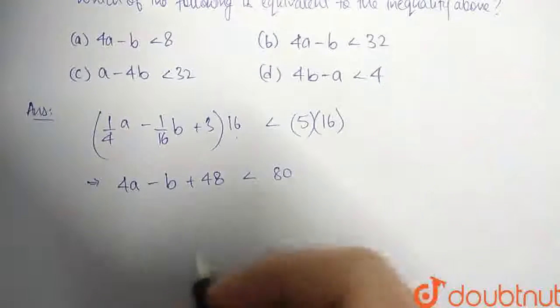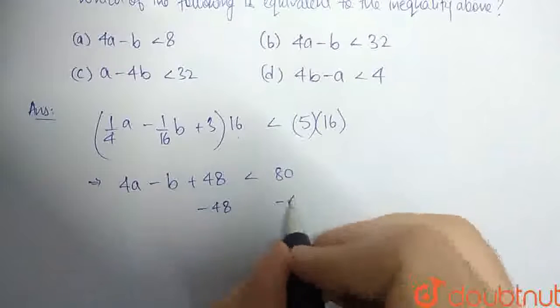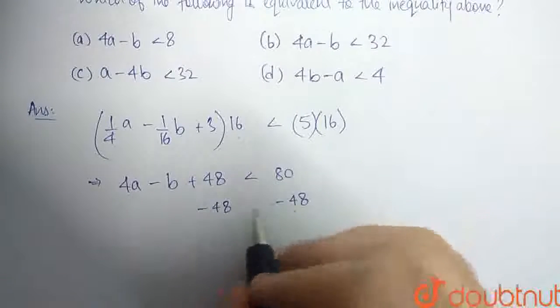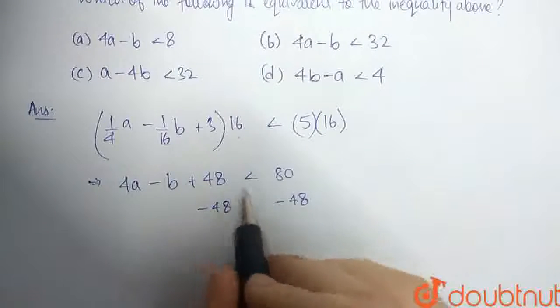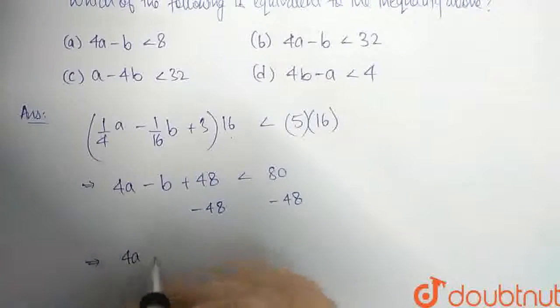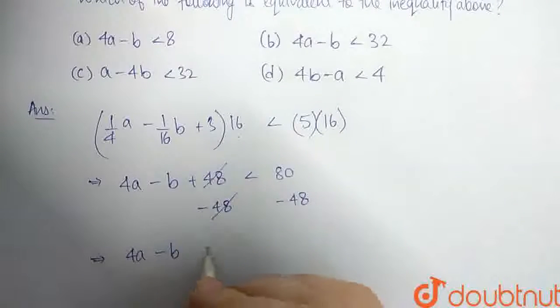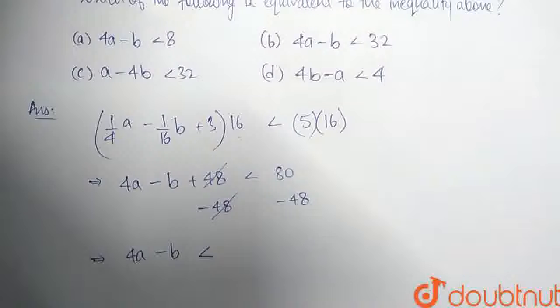Next, we can subtract 48 from both sides of the inequality. Again, addition and subtraction do not affect the inequality symbol. So we have 4a minus b plus 48, the 48 gets cancelled. And on the right hand side, we have 32.